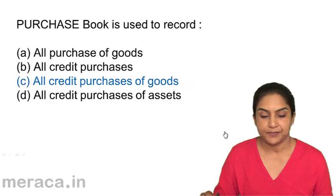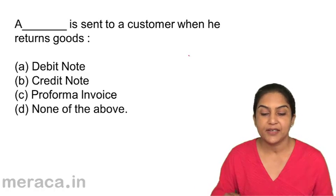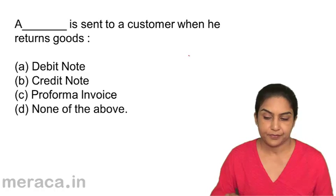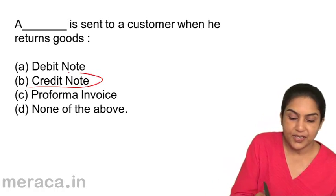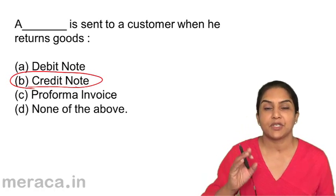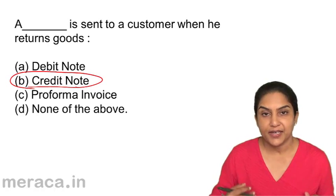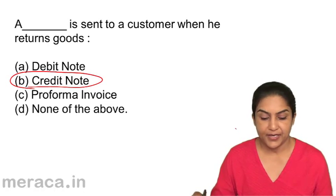A blank is sent to a customer when he returns goods: a) debit note, b) credit note, c) proforma invoice, or d) none of the above. A credit note is sent to the customer. When we send goods to a customer, the customer's account is debited. When he returns goods, the customer's account is to be credited, so we send him a credit note. Correct answer: b.